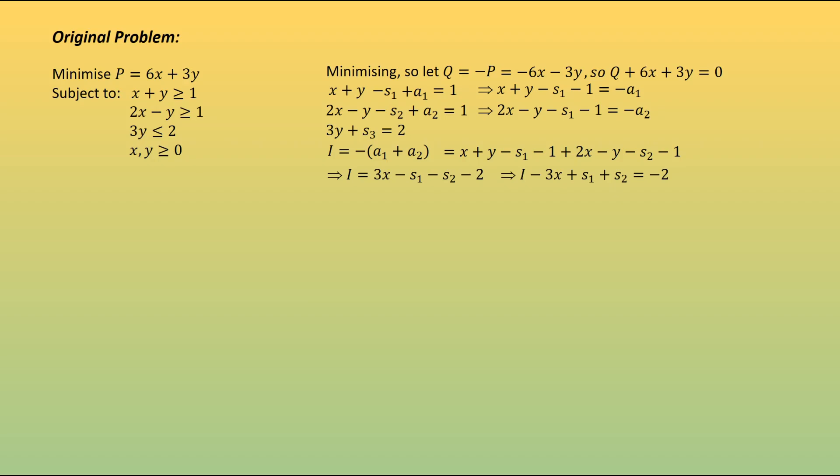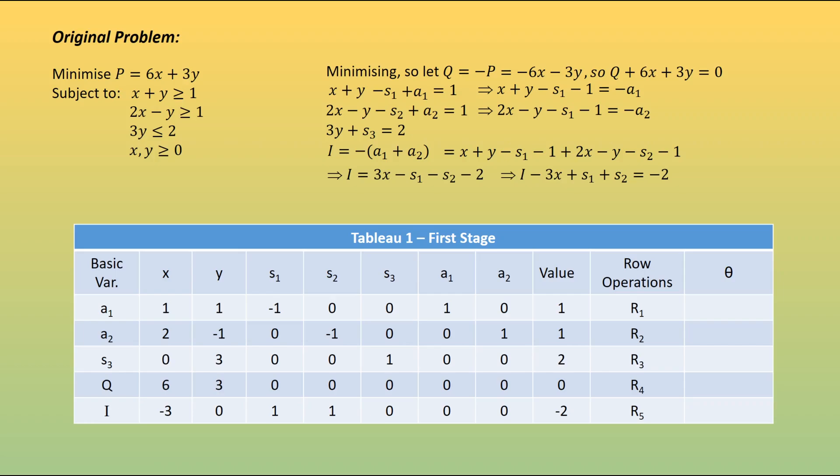We can now construct our initial tableau. So what we've got here for our basic variables is we're going to take the artificial values. You'll notice that for the two constraints which have greater than, our basic variable is the artificial value. We're saying that our artificial value is taking the entirety of the value that x, y, s1, s2, and so on are equal to 0. So a1 has the value of 1. In our second constraint, we have the same thing. a2 is equal to 1. And in the third one, s3 is taking up all of the value of the constraint. So s3 is equal to 2.